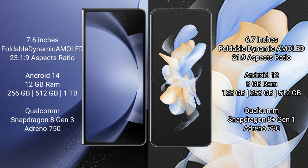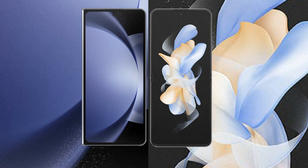The Samsung Galaxy Z Fold 6 comes with 12GB RAM and 256GB, 512GB, or 1TB internal storage, powered by the Qualcomm Snapdragon 8 Gen 3 processor and Adreno 750 GPU. The Samsung Galaxy Z Flip 4 comes with 8GB RAM and 128GB, 256GB, or 512GB internal storage, powered by the Qualcomm Snapdragon 8 Gen 1 processor and Adreno 730 GPU.